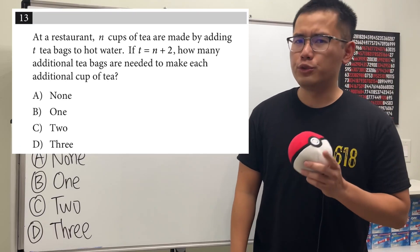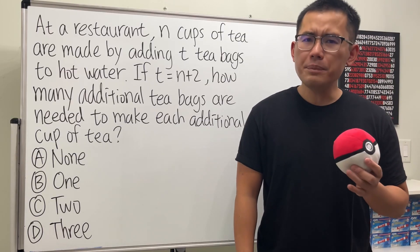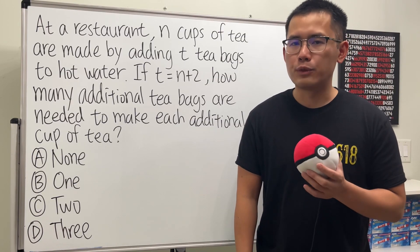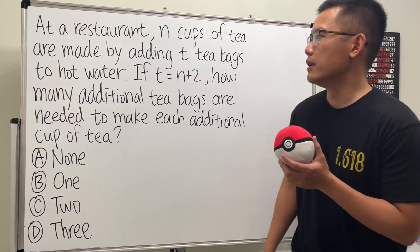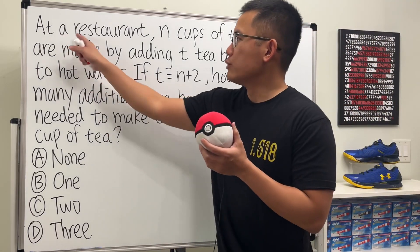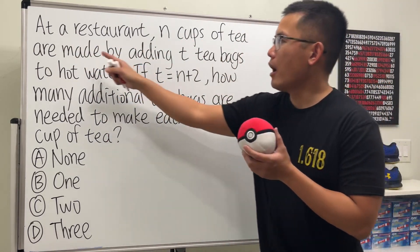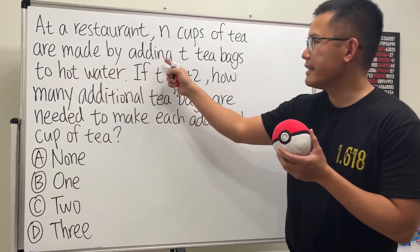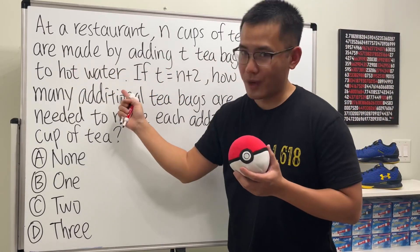This is a pretty tricky SAT math question, not really because of the math, but really because of the wording. So have a look right here. At a restaurant, n cups of tea are made by adding tea bags to hot water.